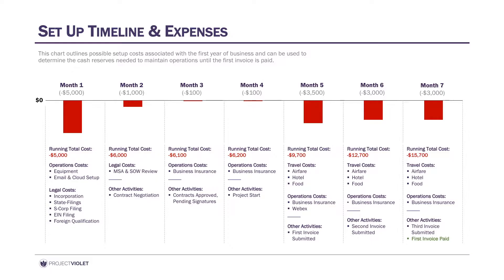In this slide, we have the setup timeline, and it's really based on my experience. It goes from when I first started setting up the company all the way to when I got my first invoice. At the top of the chart you'll have the different months, and right underneath that are the expenses and costs incurred in that month. Below the chart you'll see a running total and more details about the different expenses.